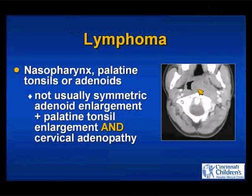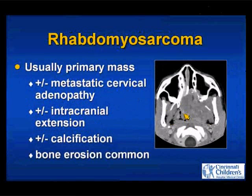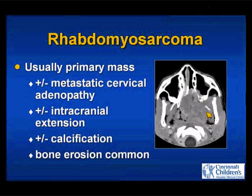This is a patient with nasopharyngeal lymphoma. Rhabdomyosarcoma can involve the nasopharynx and region of the adenoids, but again not usually the adenoids themselves. It likes to destroy bone, likes to be heterogeneous, and particularly in the region of the nasopharynx has a fairly high incidence of intracranial extension.